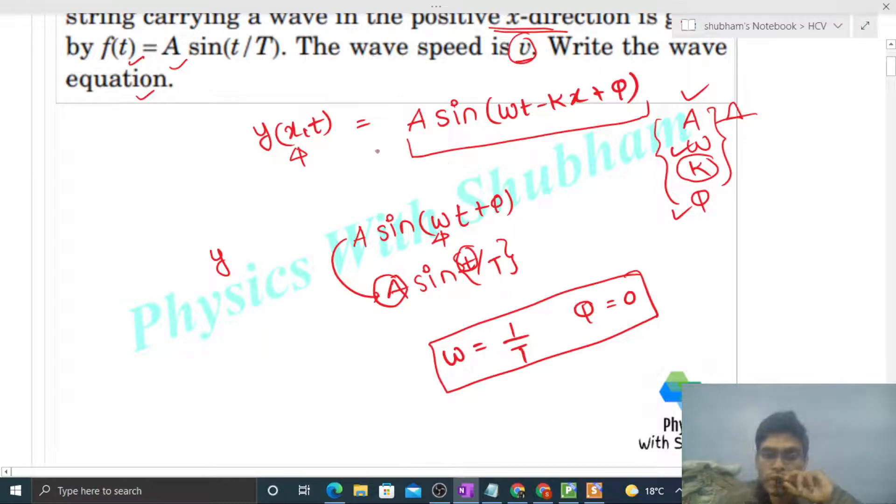The speed of the wave is the coefficient of time divided by coefficient of x, which is given as v. So from here, find out the value of k. This will be ω by v, and ω is 1 upon T, so k will be 1 upon Tv.